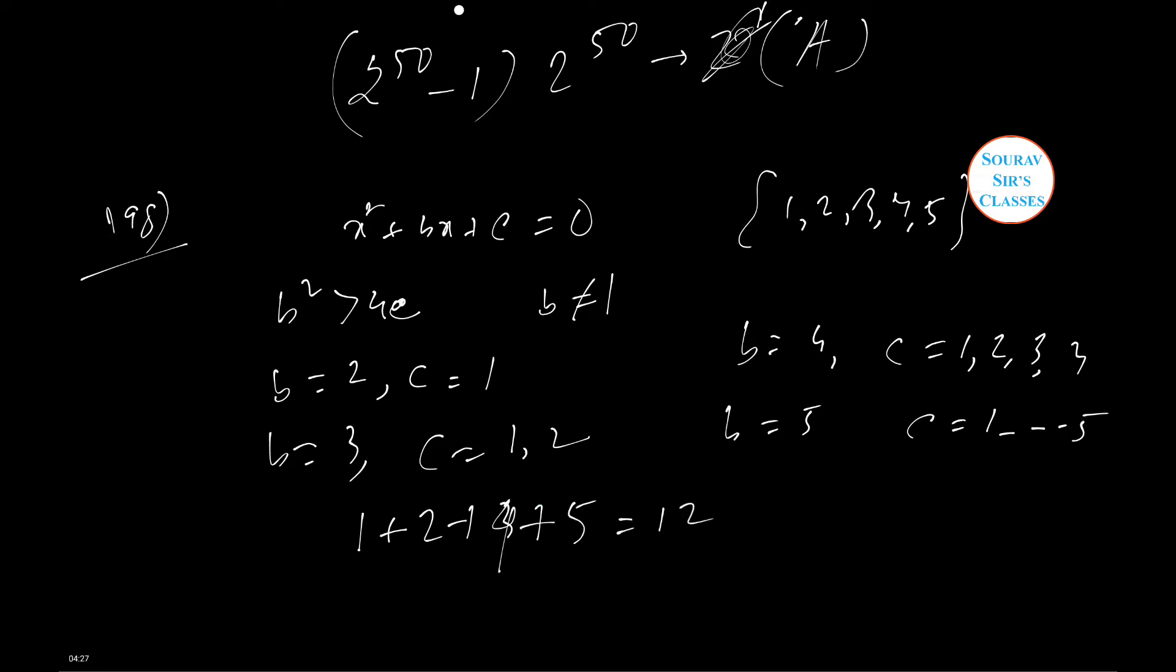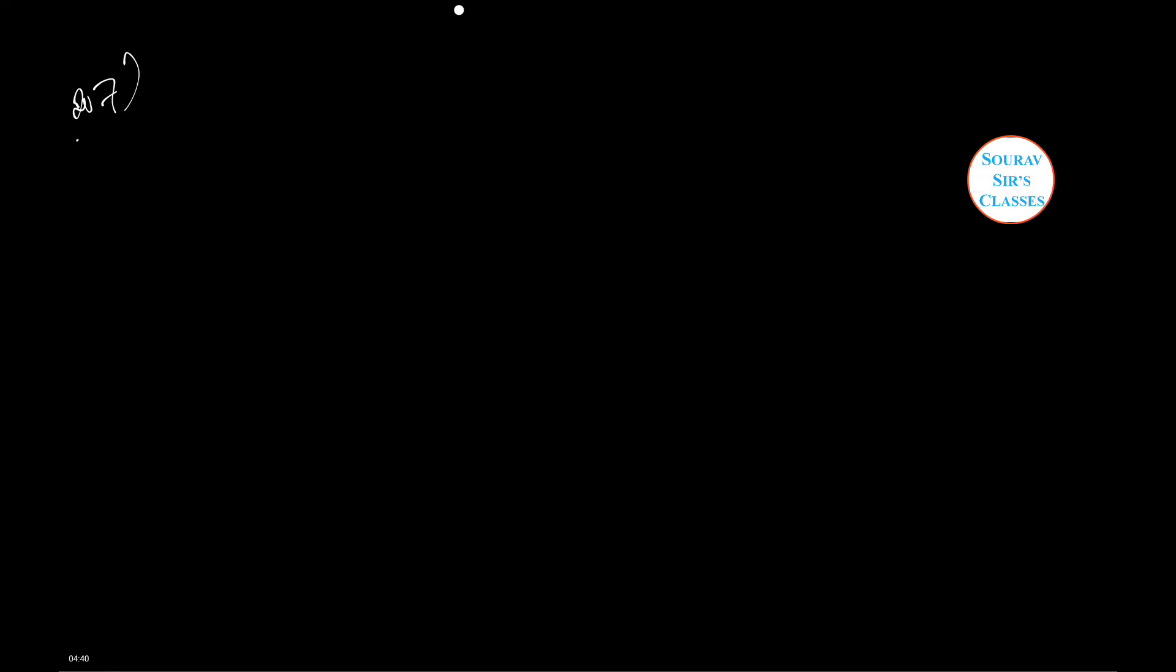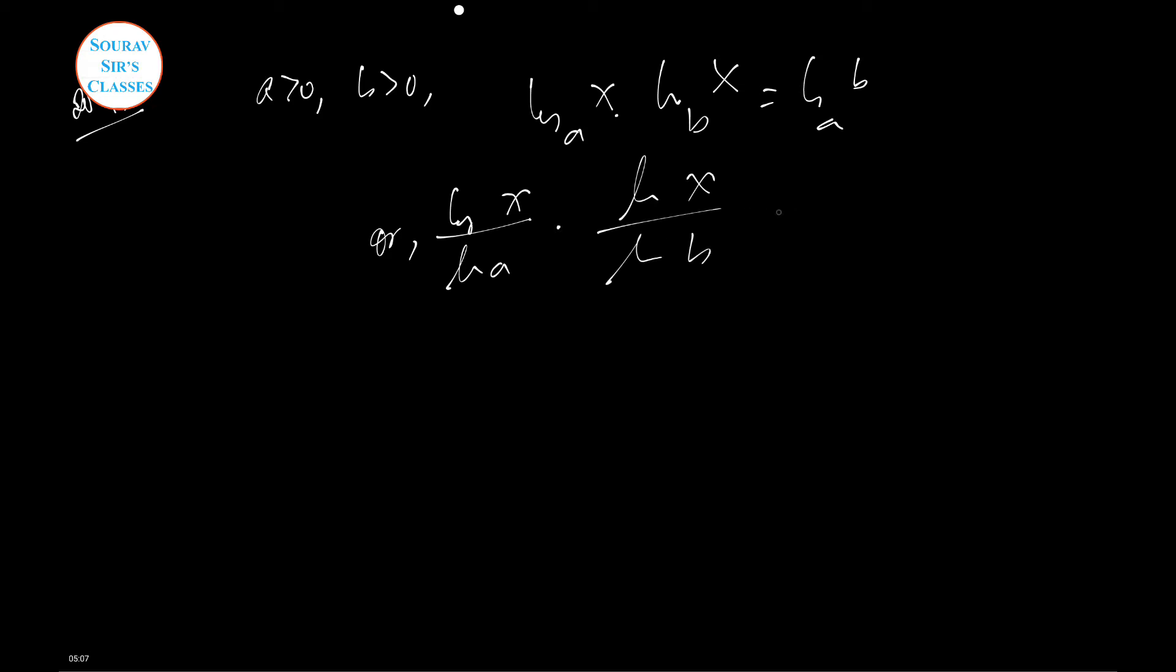Next is question 207. Given a > 0, b > 0, a ≠ 1, b ≠ 1, find the number of values of x which satisfy this equation: log_a(x) × log_b(x) = log_a(b). Splitting the log, we get (log x / log a) × (log x / log b) = log b / log a. This simplifies to (log x)² = (log b)², so log x = ±log b, giving x = b or x = 1/b. There are two solutions, so option B is correct.